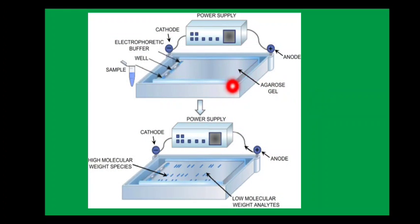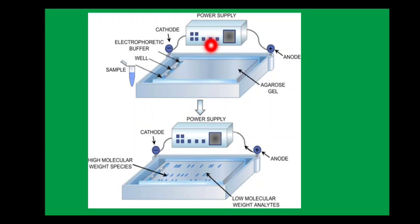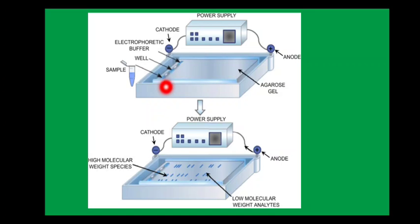In gel electrophoresis, we pour agarose gel into the apparatus. You can see the anode and cathode electrodes, and we supply power with a battery. The anode is the positively charged electrode and the cathode is the negatively charged electrode. Inside the gel, there are wells — three or four wells are present — and we insert our DNA sample into these wells near the cathode.